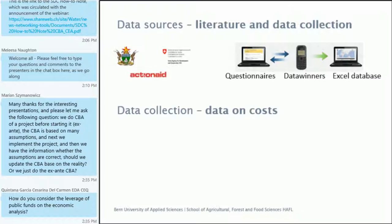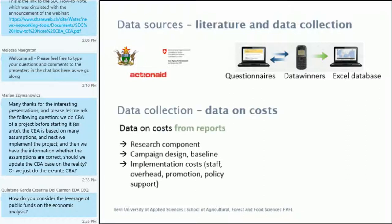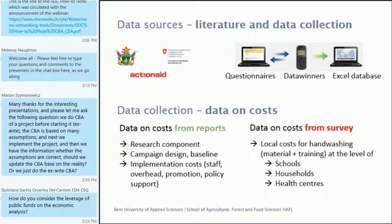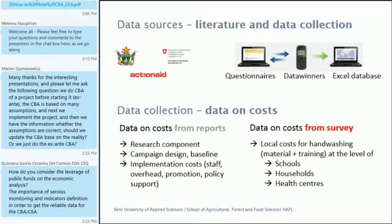Data on costs from the survey: there were almost no costs related to local stakeholders in the reports, so this was mainly what we had to collect in addition — what was paid by the locals for hand-washing material and training at the levels of schools, households, and health centers. In the cost-effectiveness analysis, benefits are measurable outcomes and impacts. Increased knowledge and enhanced capacities — even though many people think these are impacts — they are not measurable as such, and they will become measurable only if there is an action linked to these increased knowledge and capacities.